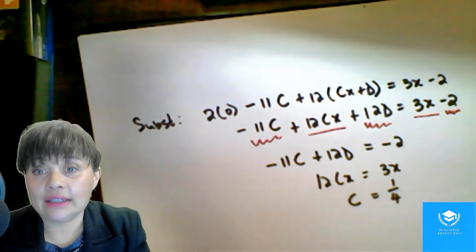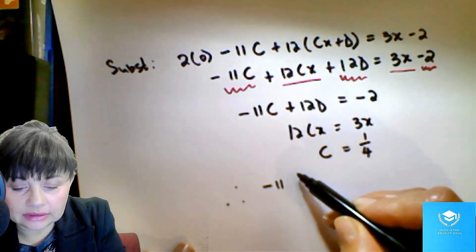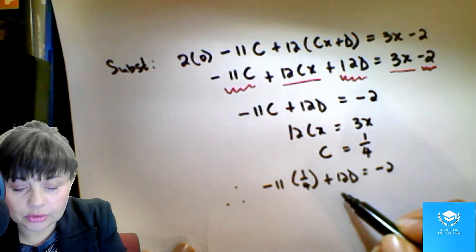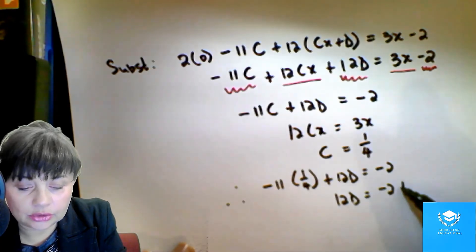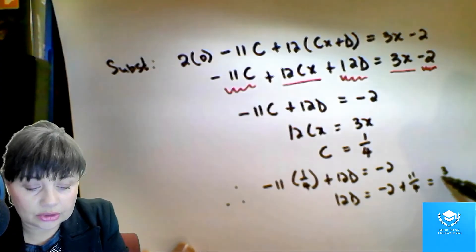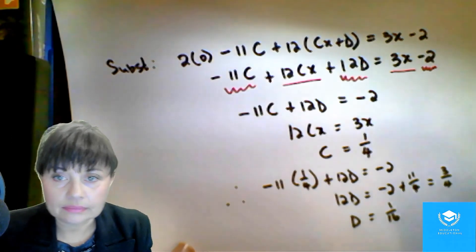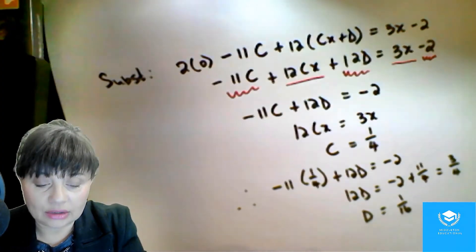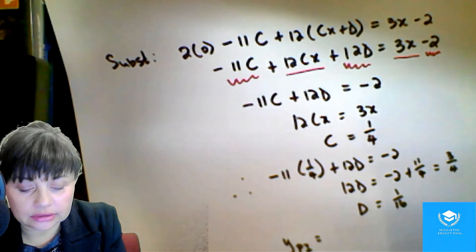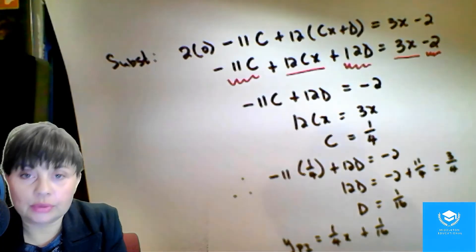Then we can find d because we now know what c is. So we have minus 11 times a quarter plus 12d equals minus 2, which means 12d equals minus 2 plus 11 over 4, and that simplifies to 3 over 4, which means d is going to simplify down to 1 over 16. So that means we now have our values for c and d, which means our particular integral is going to be a quarter x plus 1 over 16.